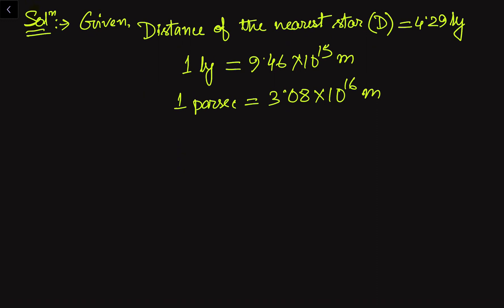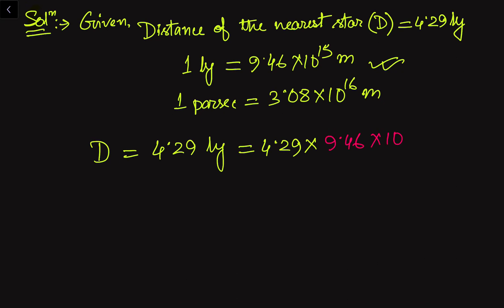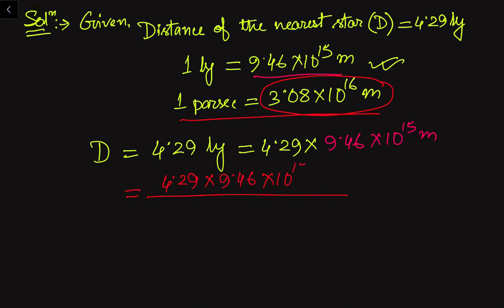Now we have to convert the distance D into the parsec unit. We have D = 4.29 light years. We first convert it into meters by multiplying with 9.46 × 10¹⁵ meters per light year. So the distance in meters is 4.29 × 9.46 × 10¹⁵ meters. Since one parsec equals 3.08 × 10¹⁶ meters, we divide by this value. So in the numerator we have 4.29 × 9.46 × 10¹⁵ and in the denominator we have 3.08 × 10¹⁶.